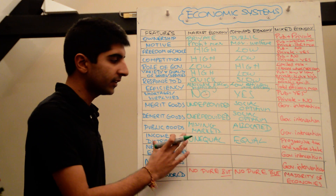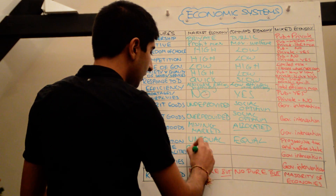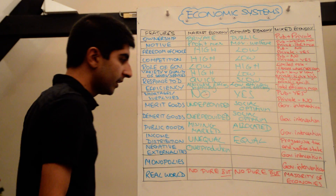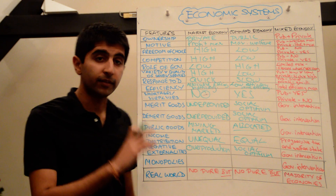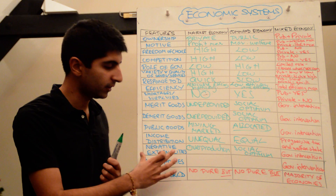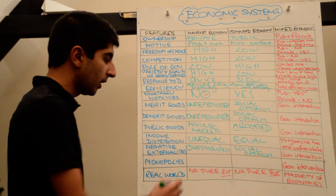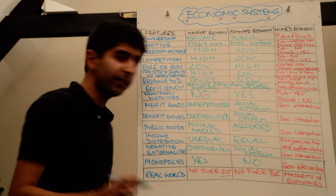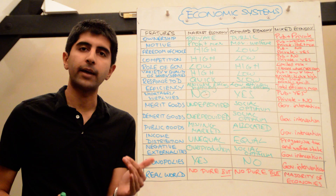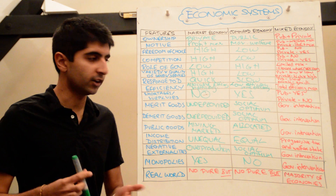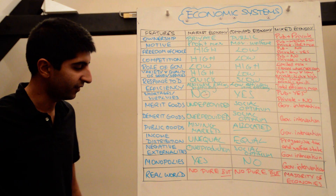Negative externalities will exist in market economies and market economies will not deal with them efficiently, leading to an overproduction of goods and services that generate negative externalities. In a command economy, we're more likely to get to the social optimum. In a market economy, profit maximisation means negative externalities in consumption and production are ignored, leading to overproduction and overconsumption of goods generating negative externalities. Monopolies can well exist in market economies but definitely not in command economies. In market economies, the risk of dominance of industries can lead to inefficient outcomes — higher prices, lower choice, lower quantities, poorer quality for consumers. In mixed economies, this is when the government will intervene to address negative externalities and solve these market failures.